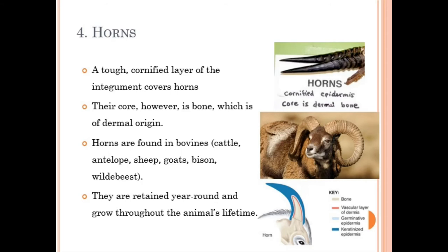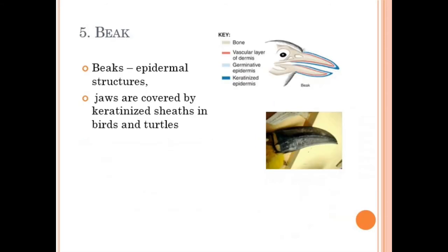If horns are broken, they do grow back. The beak is a very similar structure to horns, having the same dermal bone, then a dermis layer with vascularization, and on top is the keratinized epidermis that provides a hardened structure for biting, cracking nuts, and digging sand and soil.